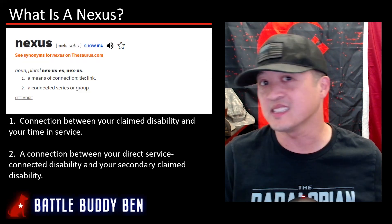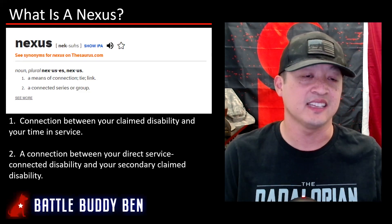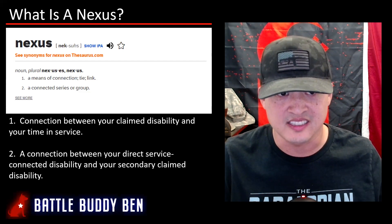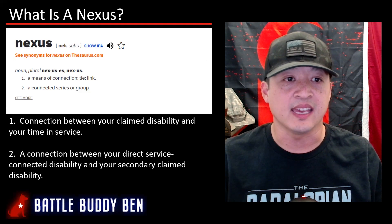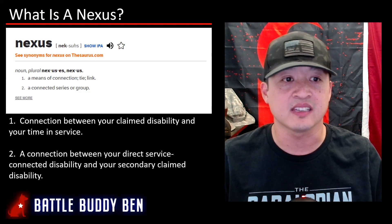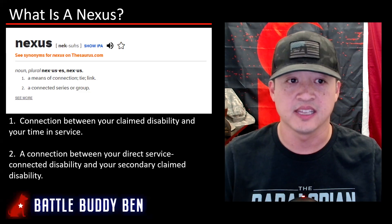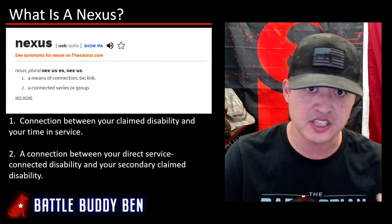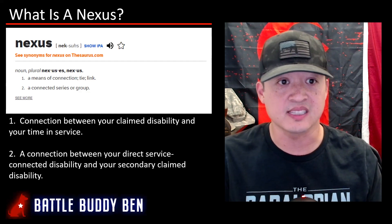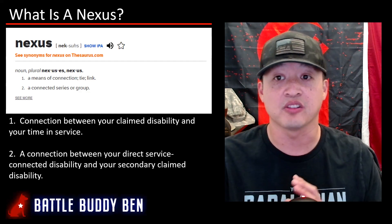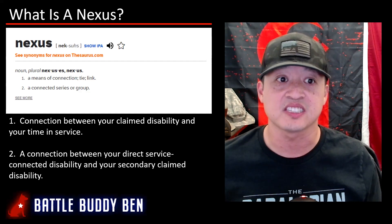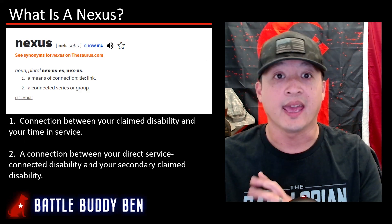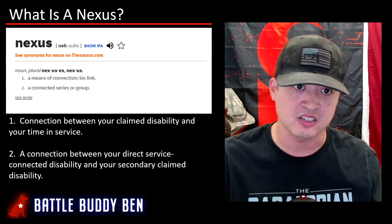First, what is a nexus? Here is a dictionary definition: it means a connection, tie, or link — or a connected series or group. What the VA is looking for is your connection between your disability that you're claiming and your time in service.